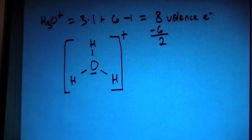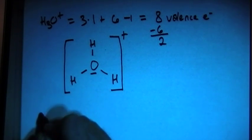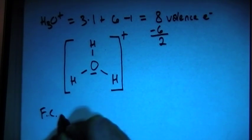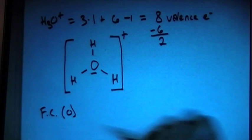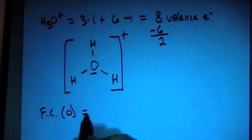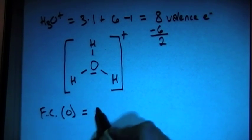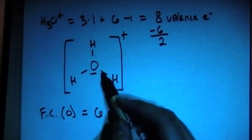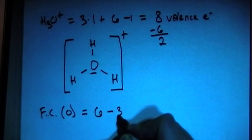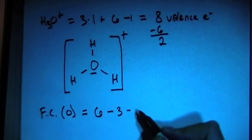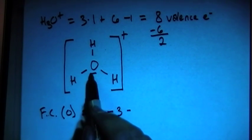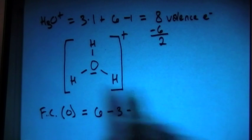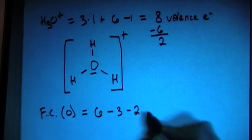...but let's go ahead and check the formal charges on it. So for the formal charge, let's go ahead and go with the oxygen first. And the formal charge of oxygen is the valence brought in, which is six, minus the number of bonds, one, two, three, so minus three. And then minus the number of non-bonding electrons, one, two. This little line represents two electrons, remember. Minus two.